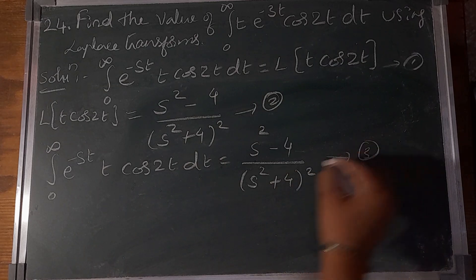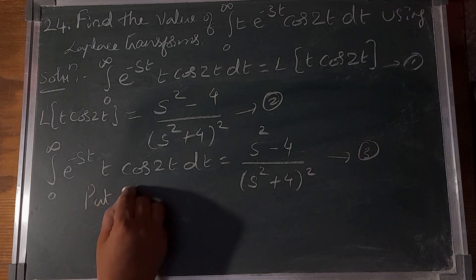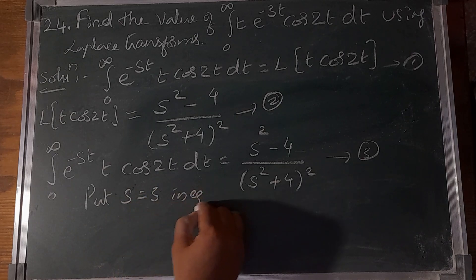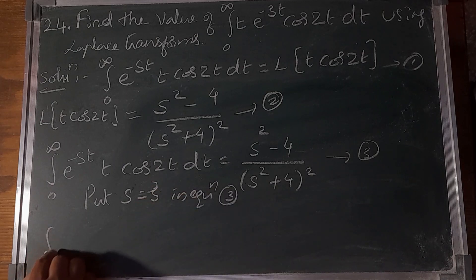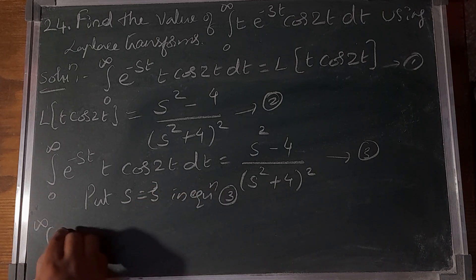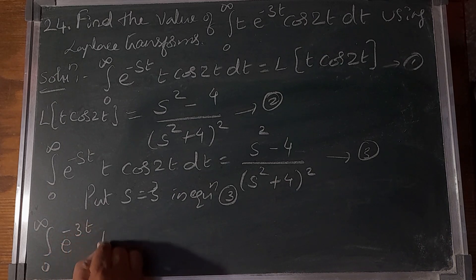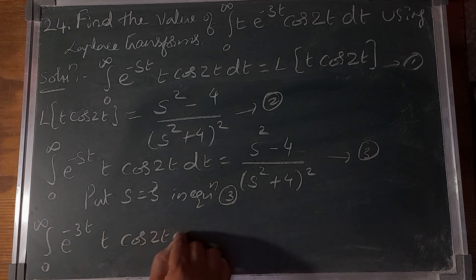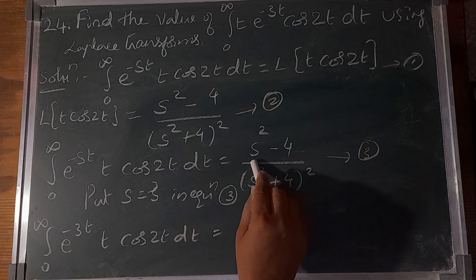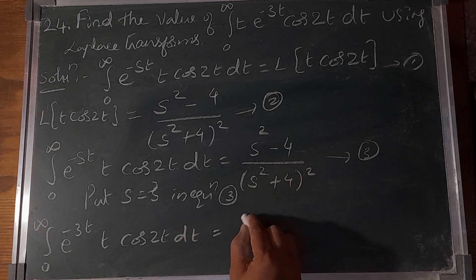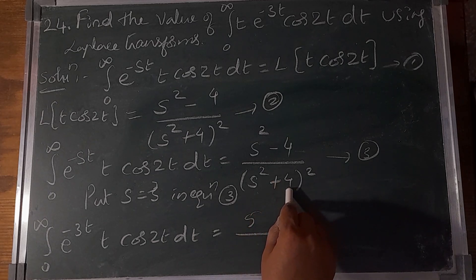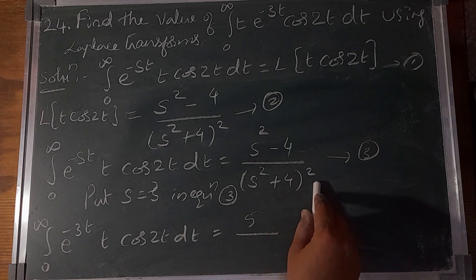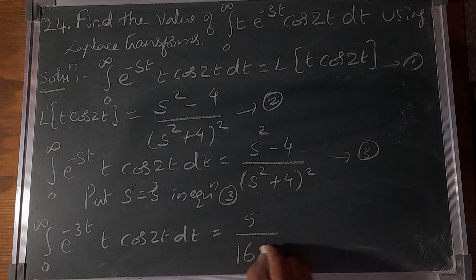Comparing with e^(-3t) in the problem, put s = 3. Then s² = 9, 9 + 4 = 13, 13² = 169. So the answer is (9 - 4)/169 = 5/169.